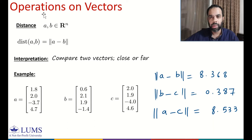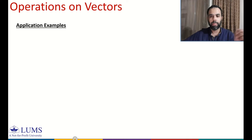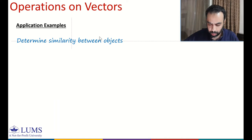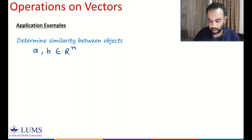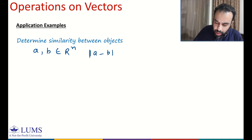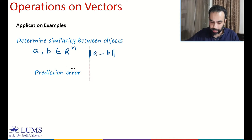How do we use this distance operation in applications? Let me review two application examples. First, we have a classification problem where we want to determine similarity between two objects. We have a vector representing the features of each object. If we have two vectors A and B in R^n, the distance norm of A minus B quantifies the similarity between two objects. If this quantity is small, the objects are close or similar to each other; if large, the objects are different.